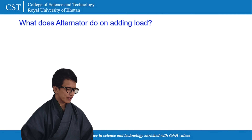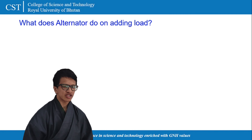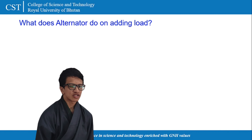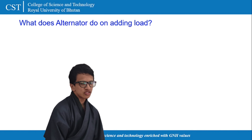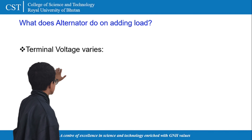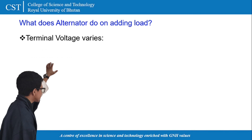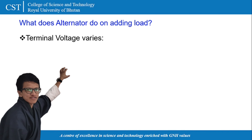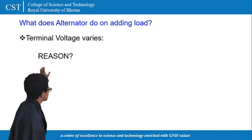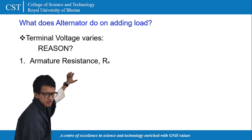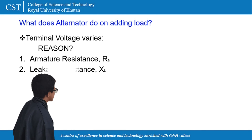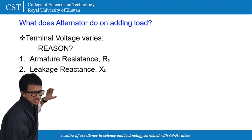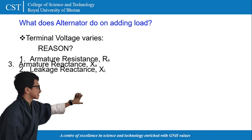What happens to an alternator after adding voltage? The terminal voltage rises. Why does it vary? It rises because of the armature resistance, the leakage reactance, and the armature reactance.